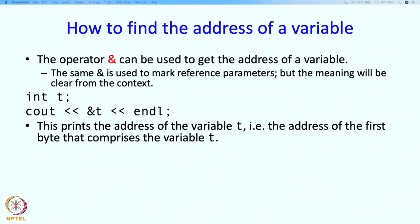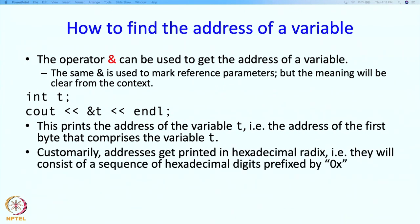Since t is an int variable, and an int variable takes 4 bytes, this is going to be the address of the very first byte among those 4 bytes. When you print an address, customarily the radix used is hexadecimal. Your value will consist of a sequence of hexadecimal digits — 0 through 9 and then a, b, c, d, e, f — and they are prefixed by 0x, which stands for hexadecimal.